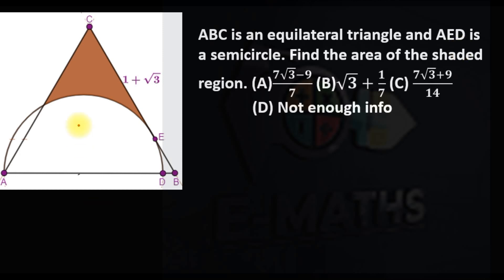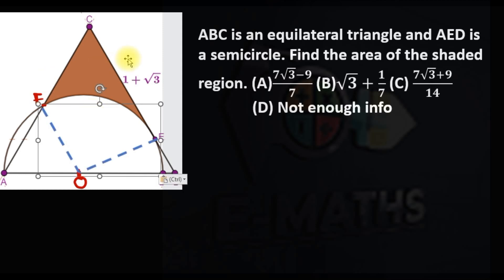The first thing I have to do is locate the center of this semicircle. I need to introduce an extra point, so let's call it F. Let's call the center O. If I join FO and EO, these will form the radius of this semicircle.